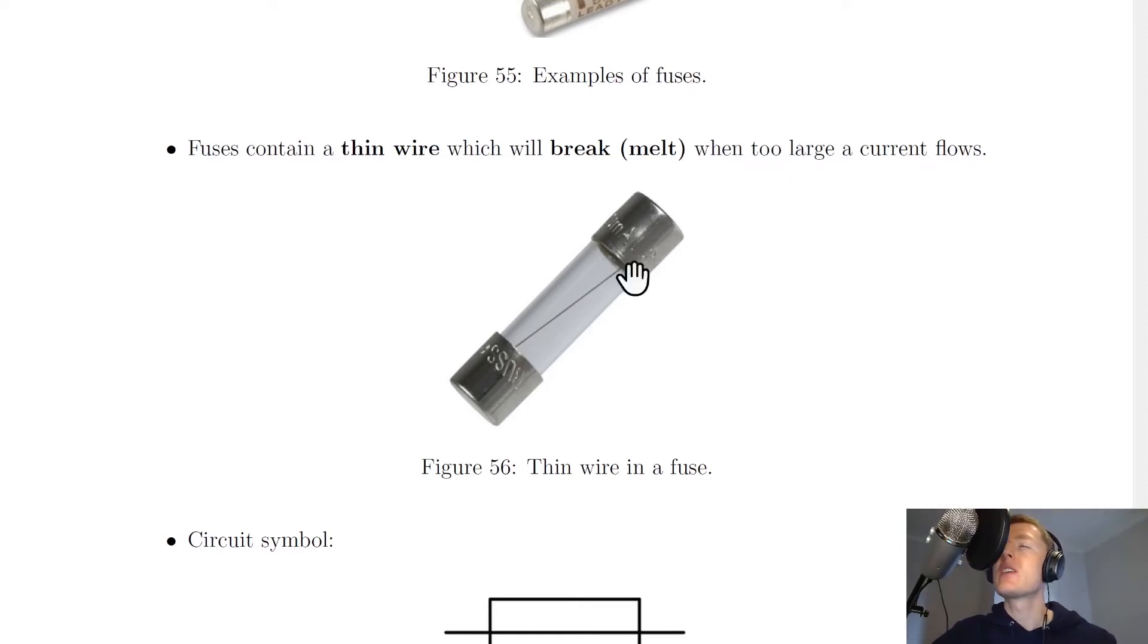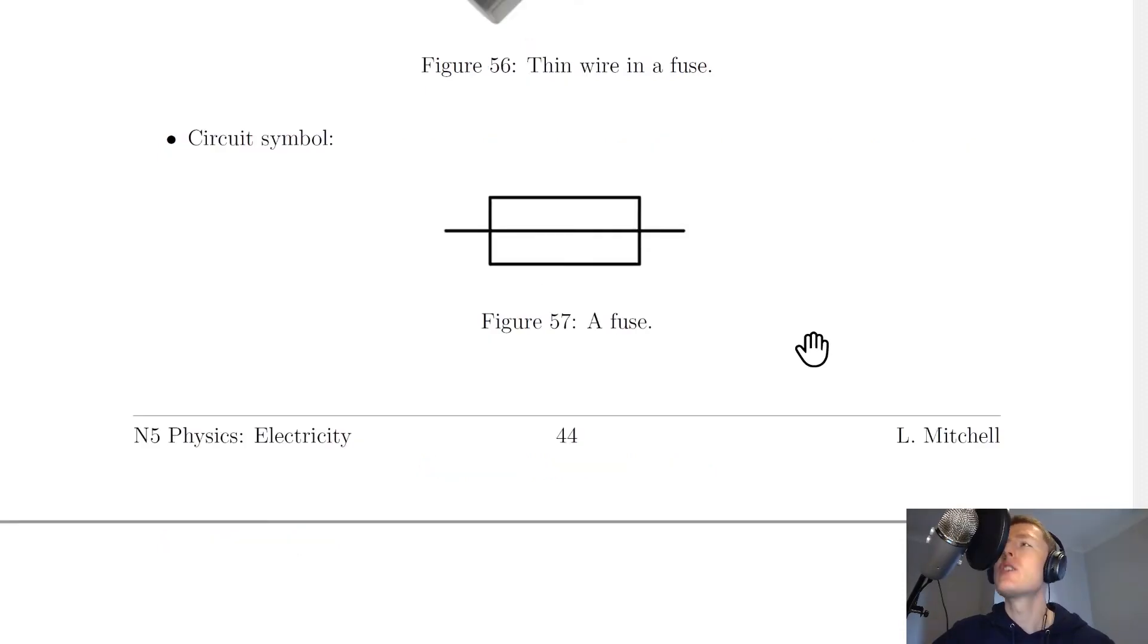So this is how the fuse works as a safety device. If too large a current flows in a circuit with a fuse, the thin wire of the fuse will melt or break, and this in turn breaks the circuit, which is what we want to prevent any wires from overheating.